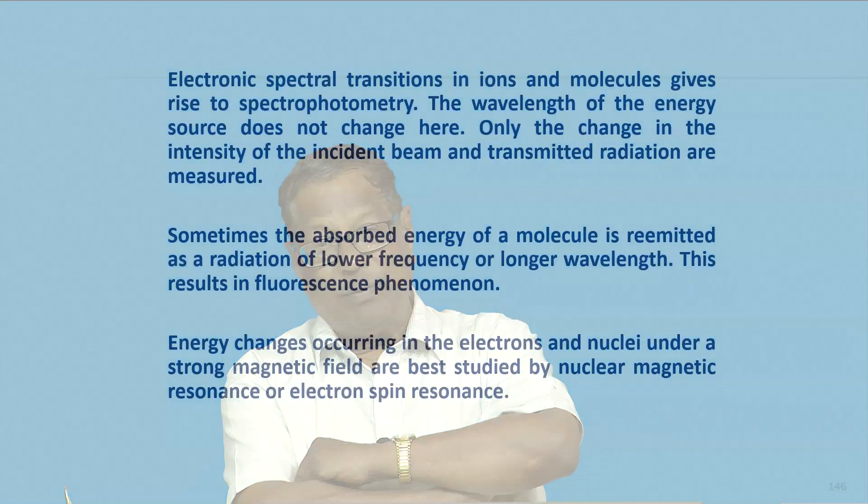In UV-visible spectrometry, sometimes the absorbed energy of the molecule is re-emitted as radiation of lower frequency or lower wavelength — this results in fluorescence. Sometimes energy changes occurring in electrons and nuclei under a strong magnetic field are best studied by NMR (nuclear magnetic resonance) or electron spin resonance, which are suitable spectroscopic techniques.